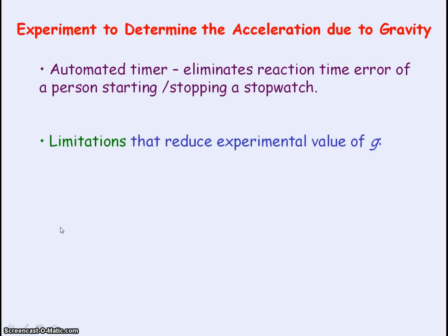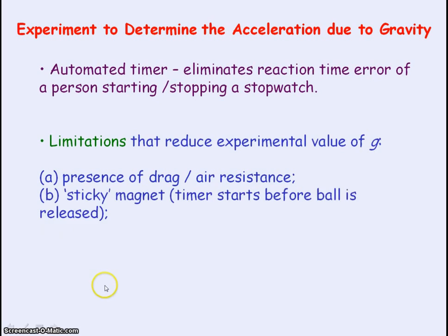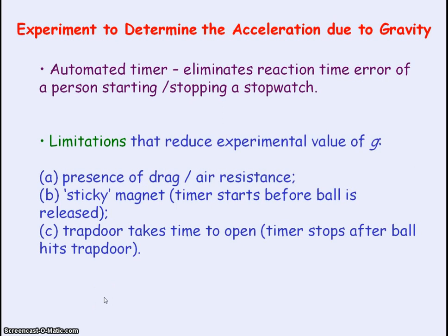However, there are limitations that reduce the value of g obtained in this experiment. The first is the presence of drag or air resistance acting on the ball bearing. Also, there can be a sticky magnet — when the switch is opened and the timer starts, there may be a delay before the magnet loses its magnetism and the ball is released. Additionally, there may be a delay between when the ball hits the trap door and when it actually opens to break the circuit and stop the timer.